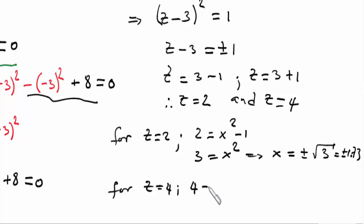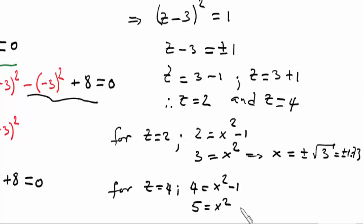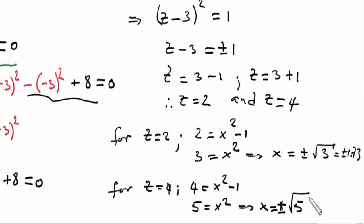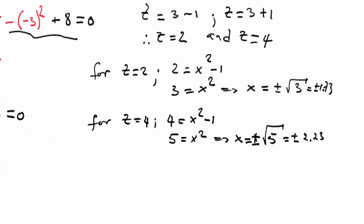For z equals 4: we have 4 equals x squared minus 1, so x squared equals 5, which means x equals plus or minus the square root of 5, approximately plus or minus 2.23.